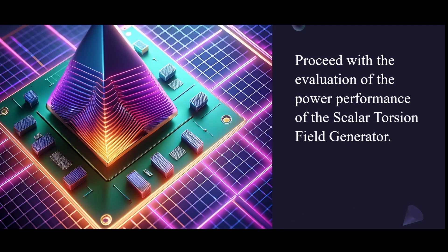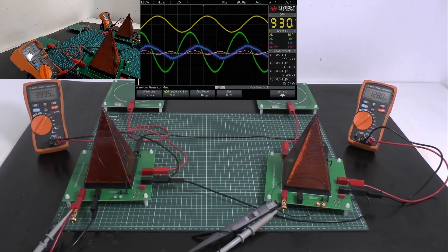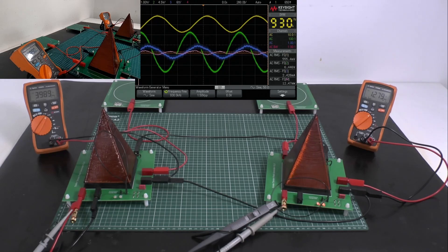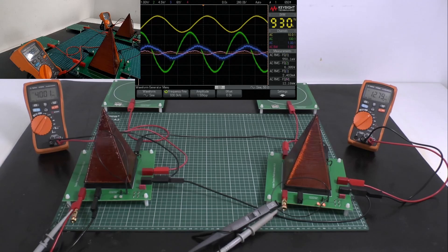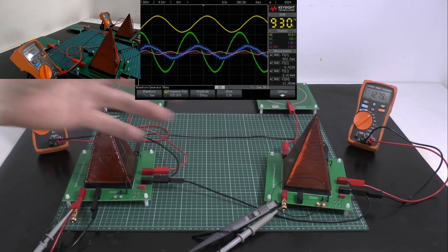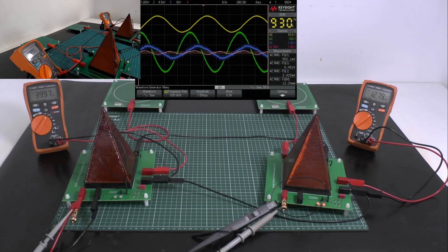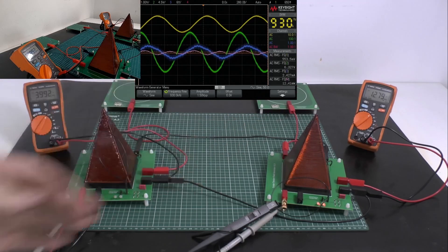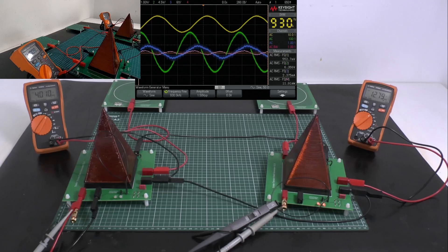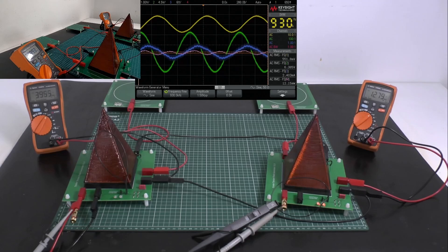Proceed with the evaluation of the power performance of the scalar torsion field generator. Starting where I left off from the overview of the demonstration table, I adjusted the frequency to 930 kHz. We can see we have the LED illuminated, 12.79 V on the receiving side and we measure 4 V here on the transmitting side.